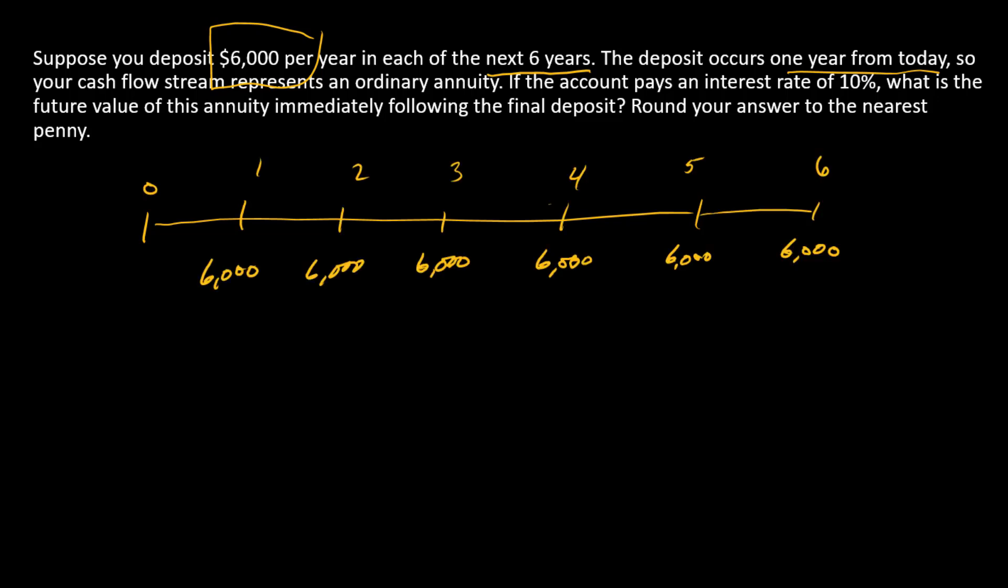There's our six payments. The context here is we're making these deposits one at a time into an account. We're going to leave all the money and see what it grows to in year six.